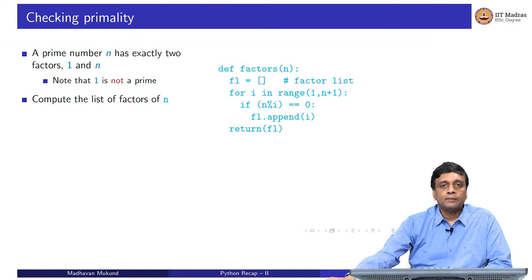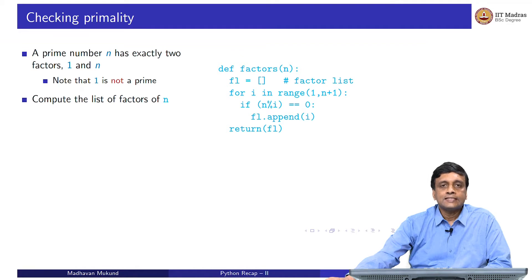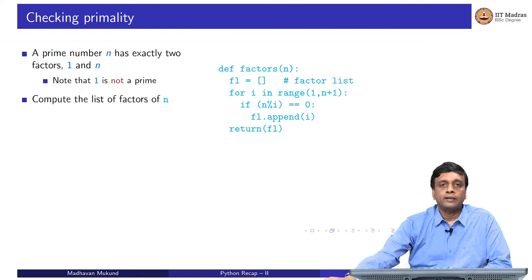One way to check whether a number is prime is to compute the list of factors of that number and then check whether that list contains exactly 1 and n. The list of factors of a number is very similar to the loop we wrote to compute the common factors between two numbers. In the earlier GCD example, we computed all common factors between m and n by running from 1 to the minimum of m and n.